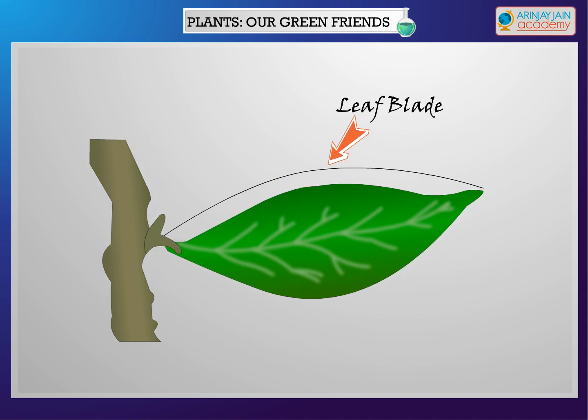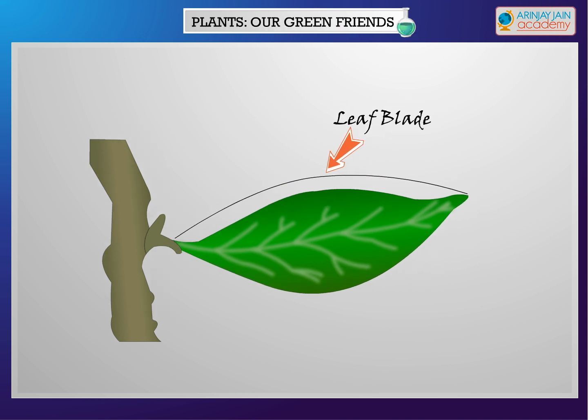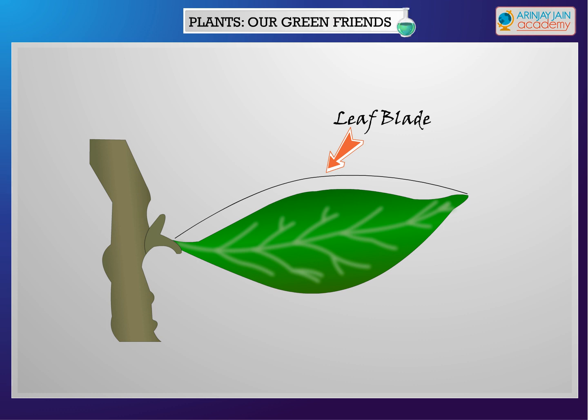The blade. It is the extended part of the leaf. Some leaves have a broad leaf blade while others have a narrow one.